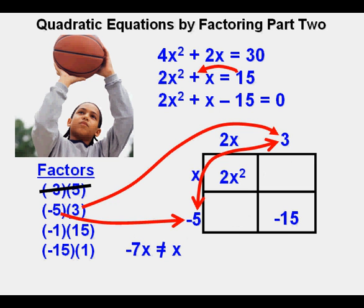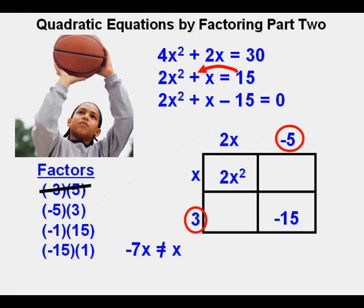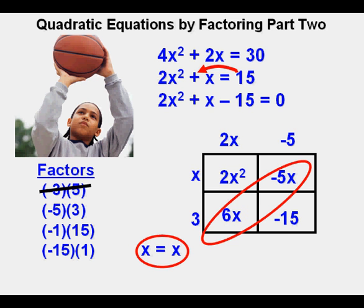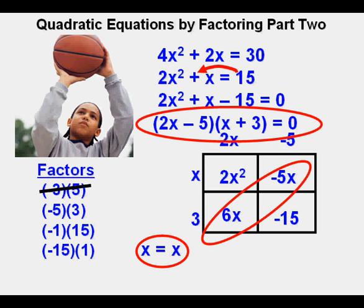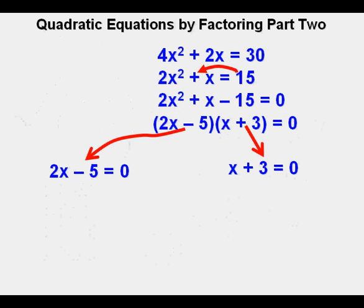Next, he switches the positions of the negative 5 and the 3, placing negative 5 on top and 3 to the side. That makes 6x in the lower left corner and negative 5x in the upper right corner. Combining like terms, 6x minus 5x equals x, which does equal x. So now he knows that quantity 2x minus 5 and quantity x plus 3 are the factors. Joe rewrites the equation in factored form as quantity 2x minus 5 times quantity x plus 3 below the standard form.